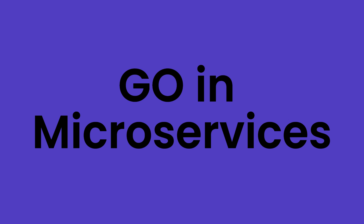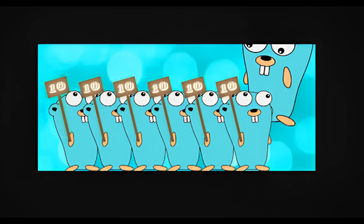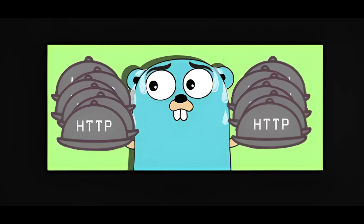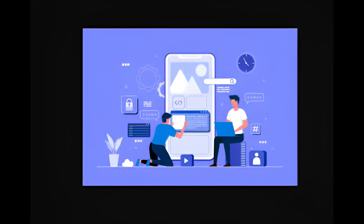Many companies are now moving away from big monolithic applications to microservices, which means different parts of an application run independently. With Go routines, Go can handle thousands of tasks at once, and because of its lightweight nature, it runs smoothly without consuming too many resources. Many big companies like Netflix, Google, and Uber use Golang to handle millions of users. So if you want to build highly scalable modern applications, Go is one of the best languages for microservices.